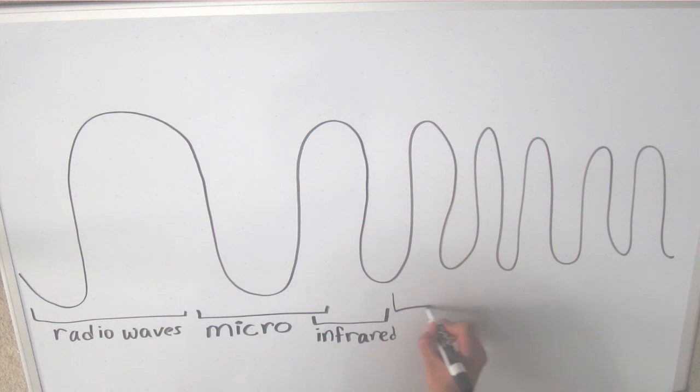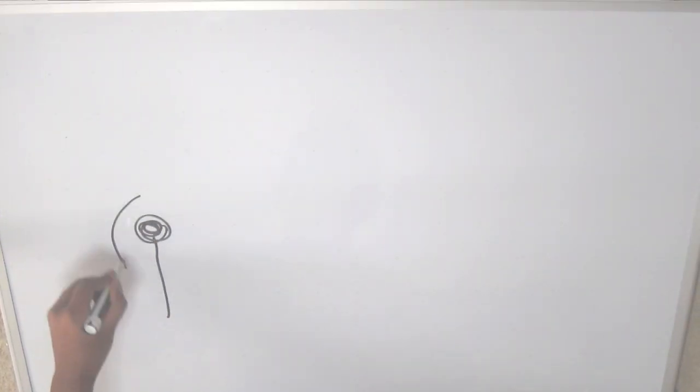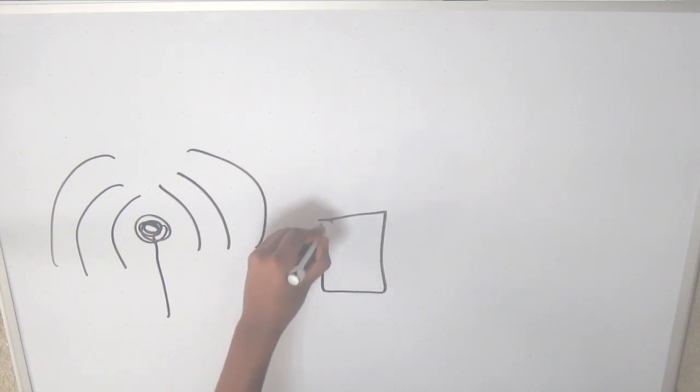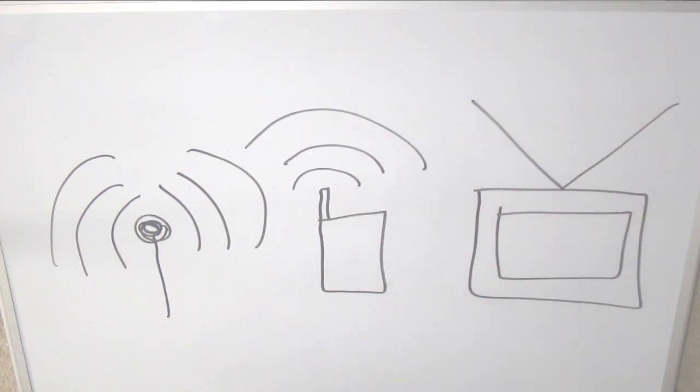The radio waves are on the very left of the electromagnetic spectrum, which means that they have the longest wavelengths and the lowest frequency. Today, we use radio signals for many things, such as Wi-Fi signals, cell phone signals, and TV signals.